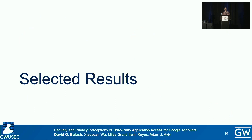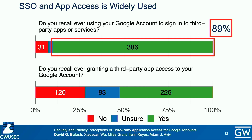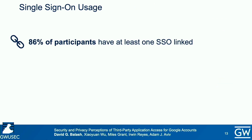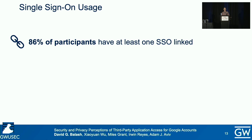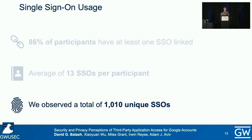We'll now take a look at some of our key results from the study. Results from the first survey found that almost 90% of our participants recall using a Google account to sign into a third-party app or service, and over half recall granting third-party app access to their account. With the data collected from our browser extension, we found that 86% of participants had at least one SSO linked to their Google account, and of those who had at least one SSO, the average number of SSOs per participant was 13. So not only do many participants use SSOs, but they also use quite a few. And we observed a total of 1,010 unique SSOs.